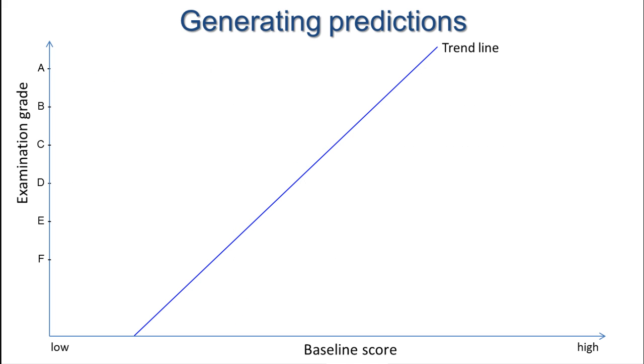So, let's strip that back to just the trend line and our axes. What do we do with it? Let's suppose we have an individual student for whom we have a baseline score, say here. Then, we can read off which point on the trend line corresponds to that score and that gives us a predicted grade. In this case, between a B and a C. OK, so that's our prediction.